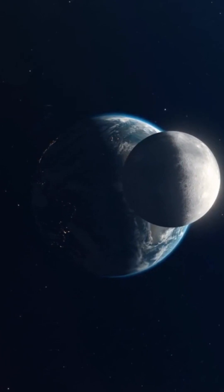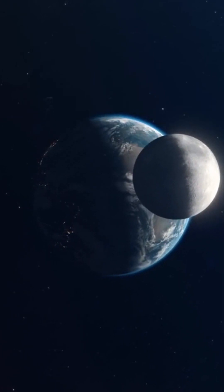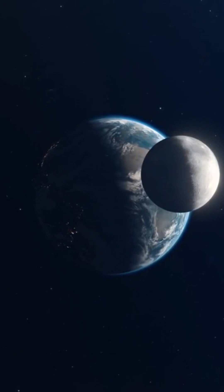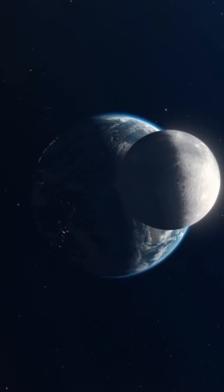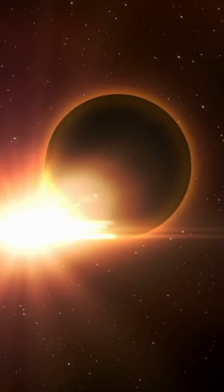A recent astronomical revelation indicates that Earth possesses a second moon, which has actually been circling our planet since 100 BC. Designated as 2023 F213, this discovery is drawing scientific attention.